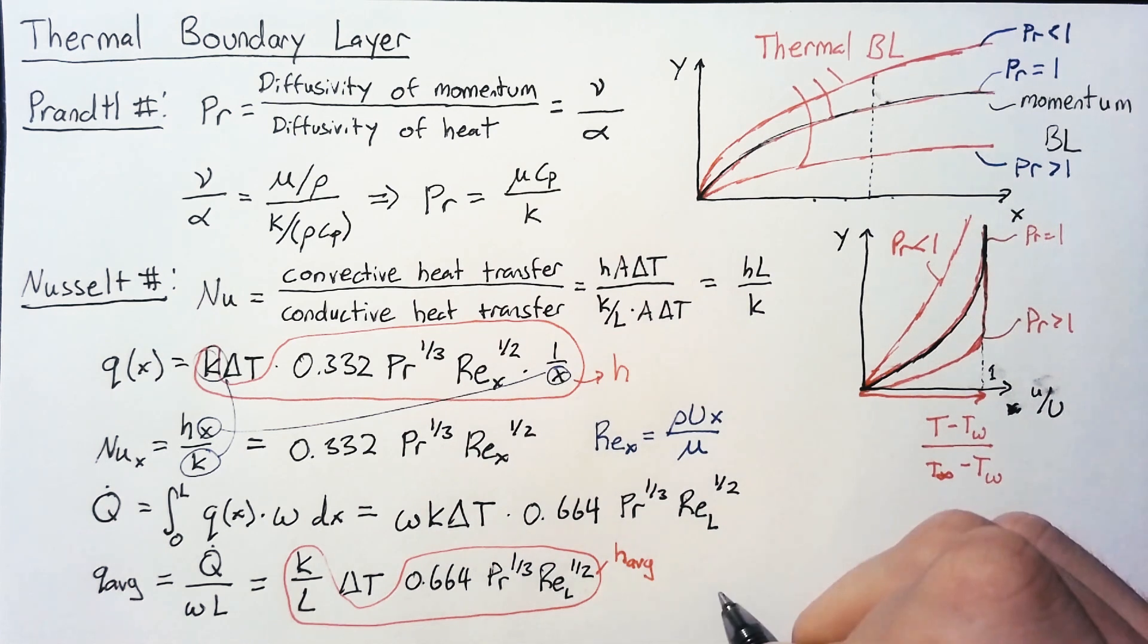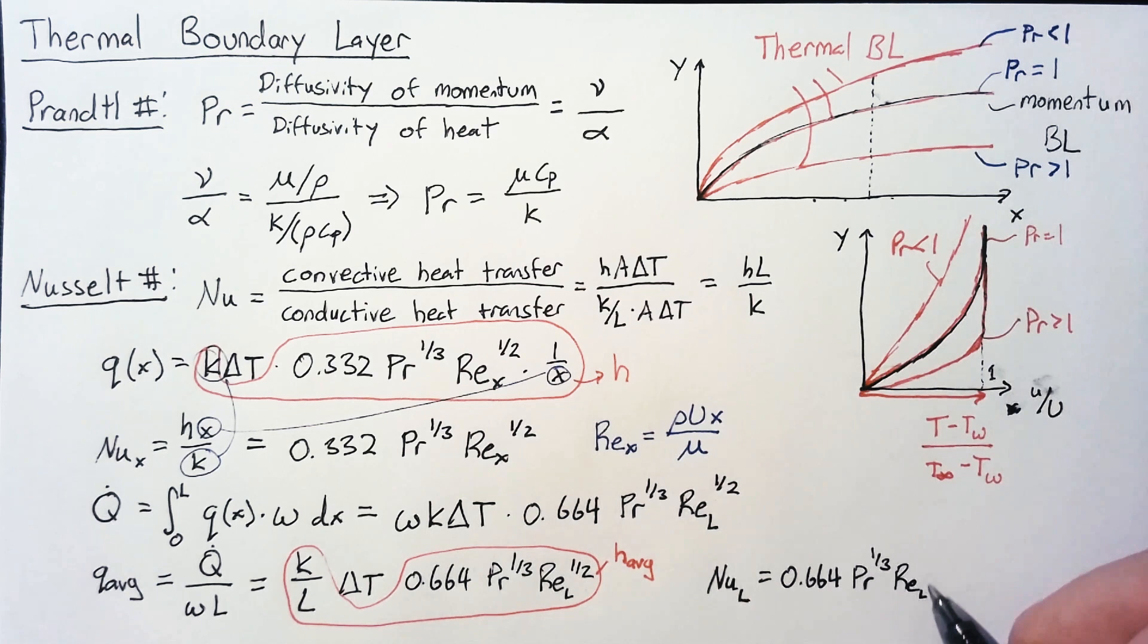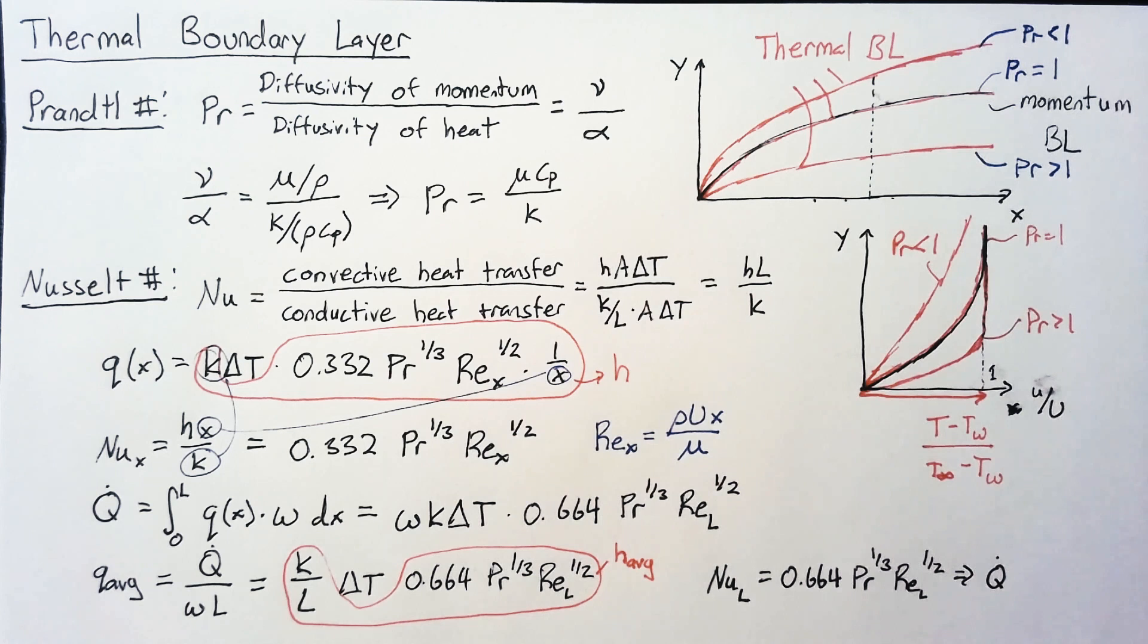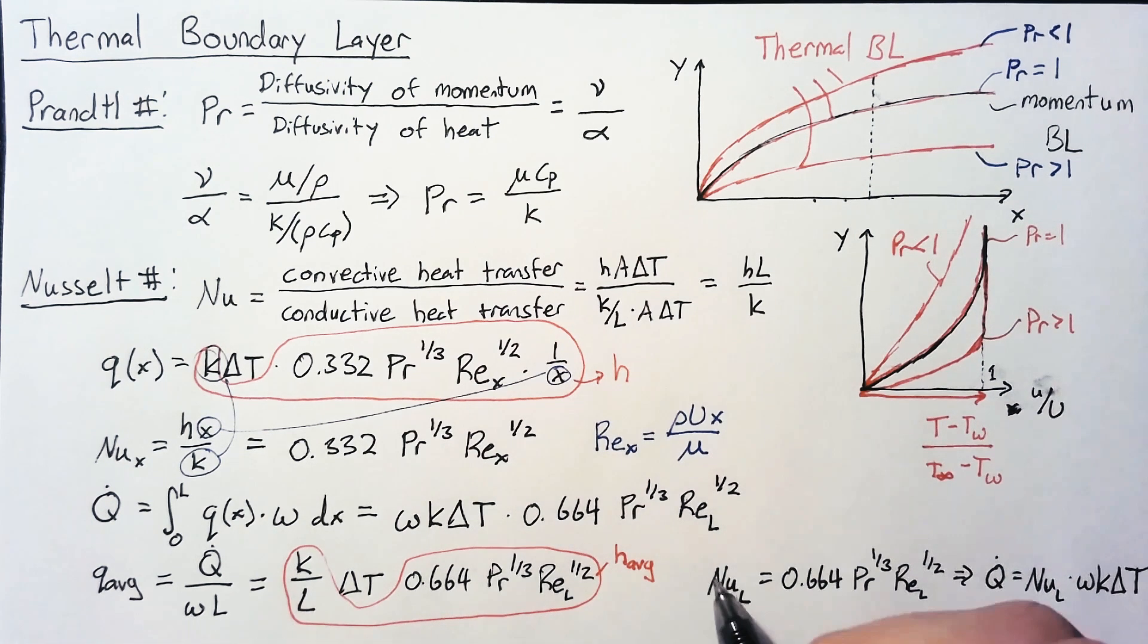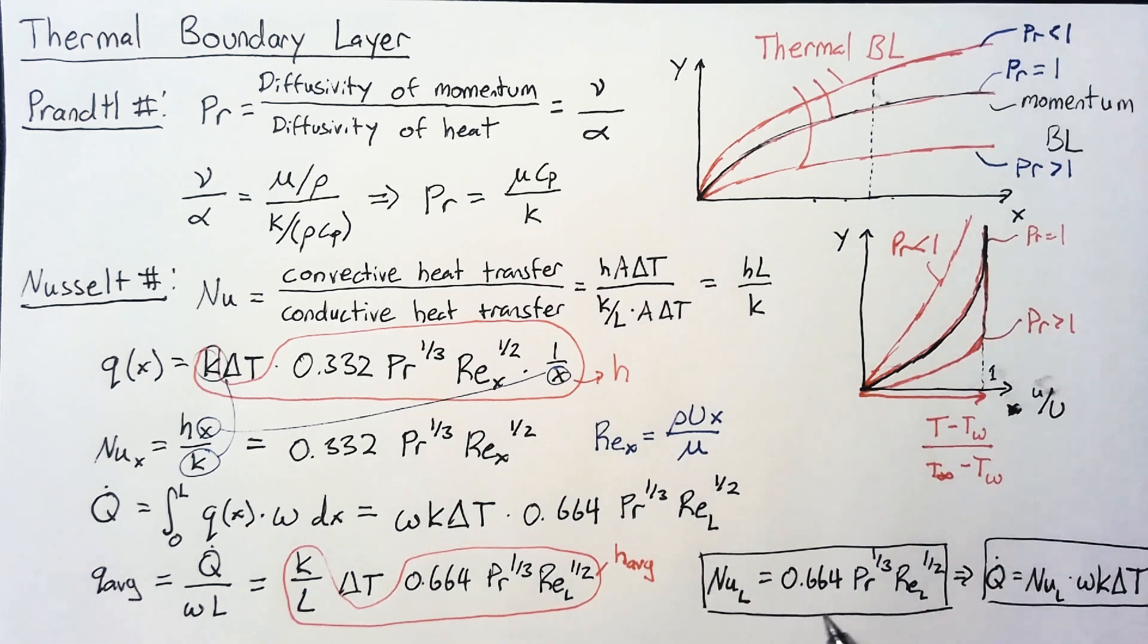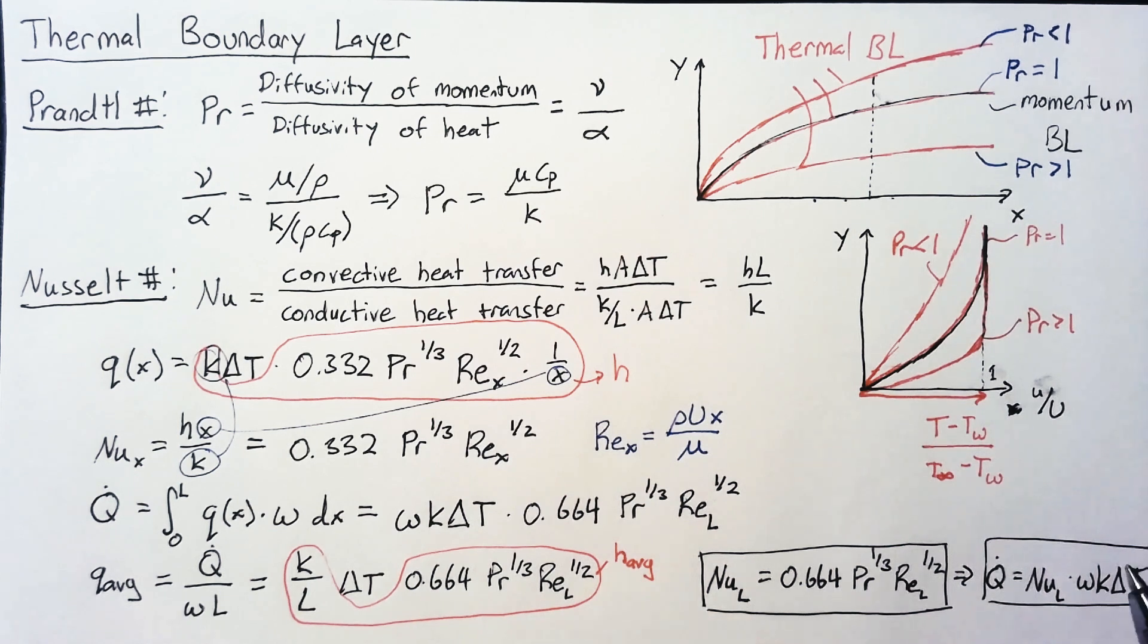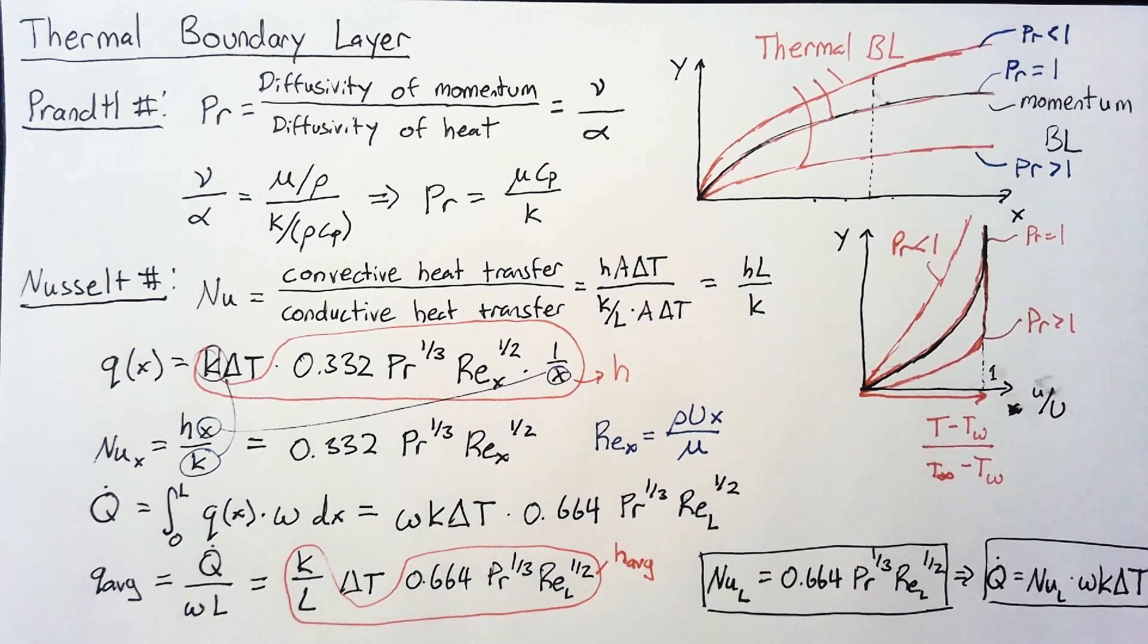For a flat plate, we can say that our Nusselt number based on length is going to be equal to 0.664 times the Prandtl number to the 1 third times the Reynolds number to the 1 half. For a flat plate, we can write the heat transfer as Q dot equals the Nusselt number multiplied by the width multiplied by K times delta T. These are the two key results from this video. We care about the Nusselt number, and we're going to care a lot about how to convert the Nusselt number back into the total heat transfer.